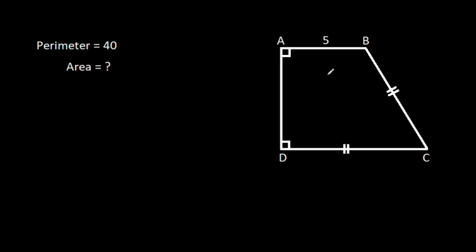In this video, we have been given that AB is 5, BC is equal to CD, and the perimeter of ABCD is 40.